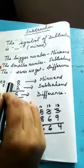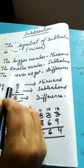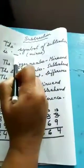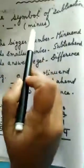Children, in standard 2, you have learnt subtraction, isn't it? And you know, the symbol of subtraction is this sign, isn't it? Yes, that is minus.